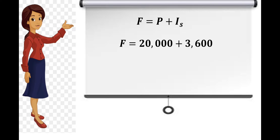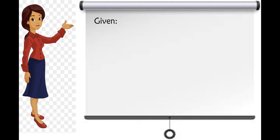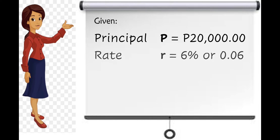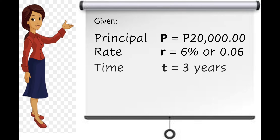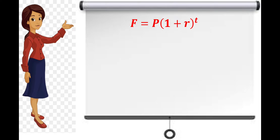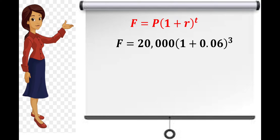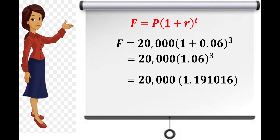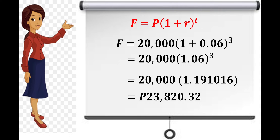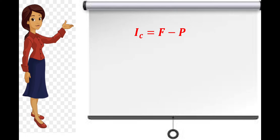Now let's find the future value and the amount of interest if 20,000 was loaned for a period of three years with an interest of 6% compounded annually. Given: principal is 20,000 pesos, rate is 6% or 0.06, and time is three years. We use F is equal to P times the quantity 1 plus R raised to T. So F equals 20,000 times 1.06 raised to the 3rd power, which equals 1.1910, multiplied by 20,000, giving us 23,820 pesos and 32 centavos. This is the future value if it is compounded.